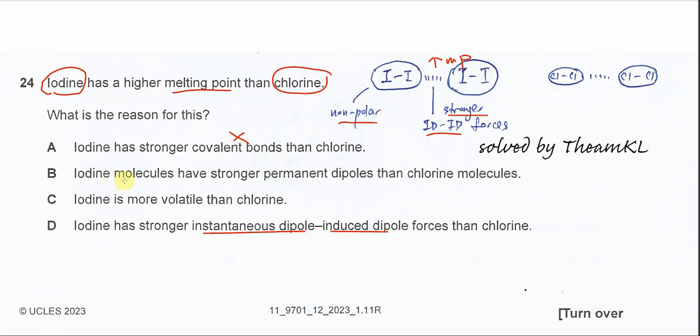B: iodine molecules have stronger permanent dipole than chlorine. This is wrong because between the molecules they just have IDID.